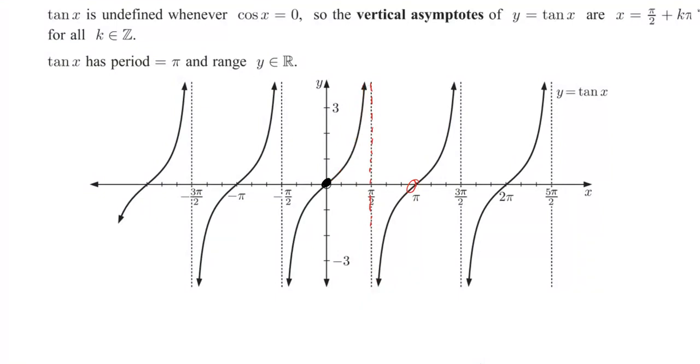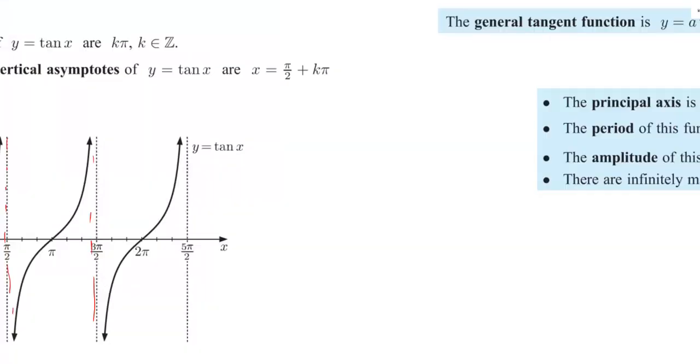This repeats and repeats and repeats and this is why the tangent graph looks as it does. It is discontinuous with asymptotes here and here and everywhere, in fact every pi radians or 180 degrees.